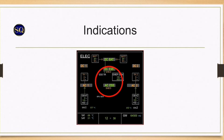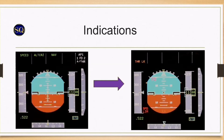Only the AC and DC essential buses are supplied from the hot bus. Only PFD1 and the upper EWD are available, and CM1 becomes PF — or whoever is sitting on the left. Autopilot, flight directors and autothrust are lost, and CM1 will have to manually fly the aircraft.